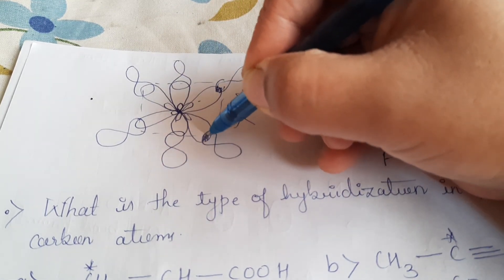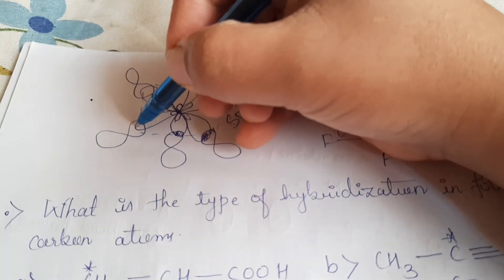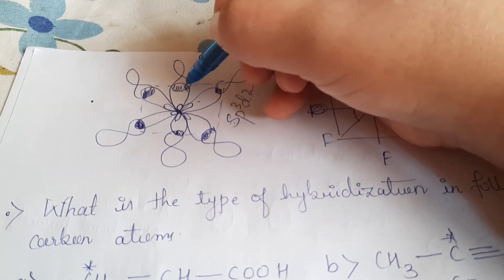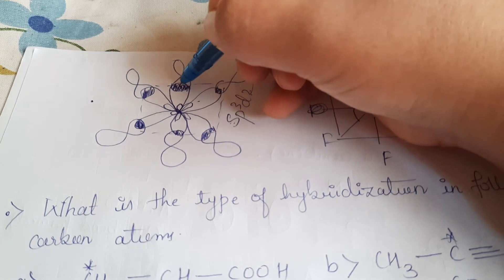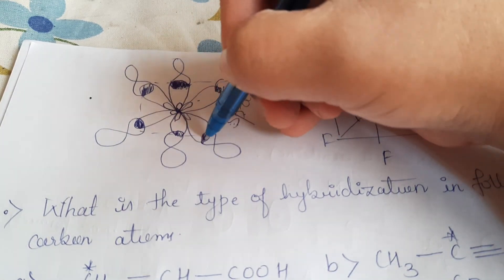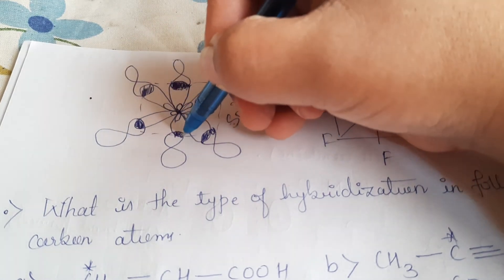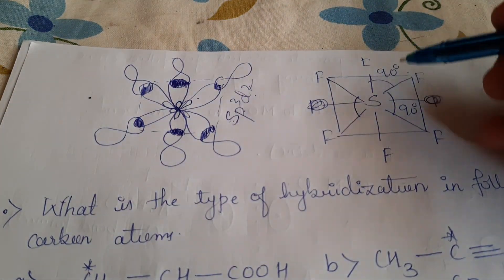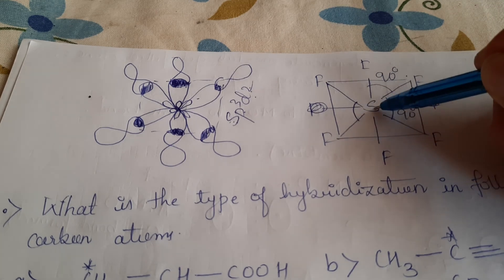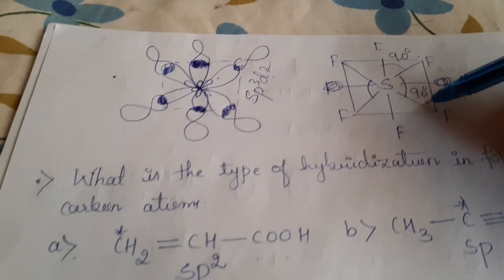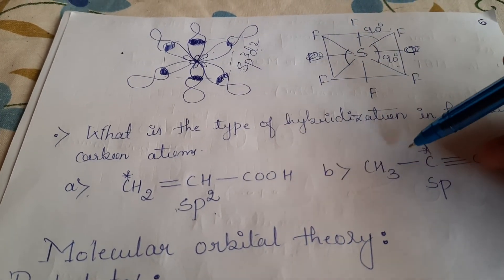The bonding shown here is between sulfur and fluorine. After hybridization of the S, P³, and D² atomic orbitals of sulfur, six fluorine atoms combine with the six hybrid orbitals of sulfur. Sulfur is at the center combined with six fluorine atoms, with a bond angle of 90 degrees between adjacent fluorine atoms, giving an octahedral geometry.